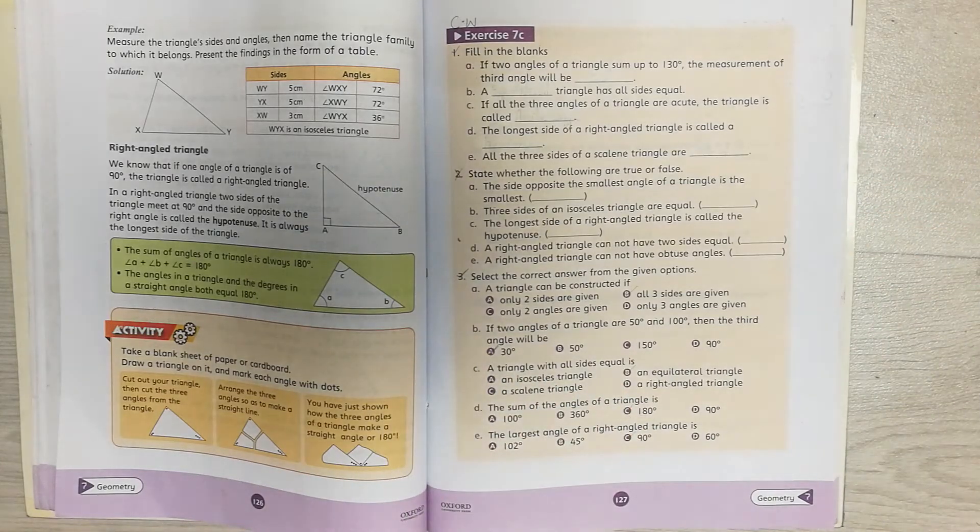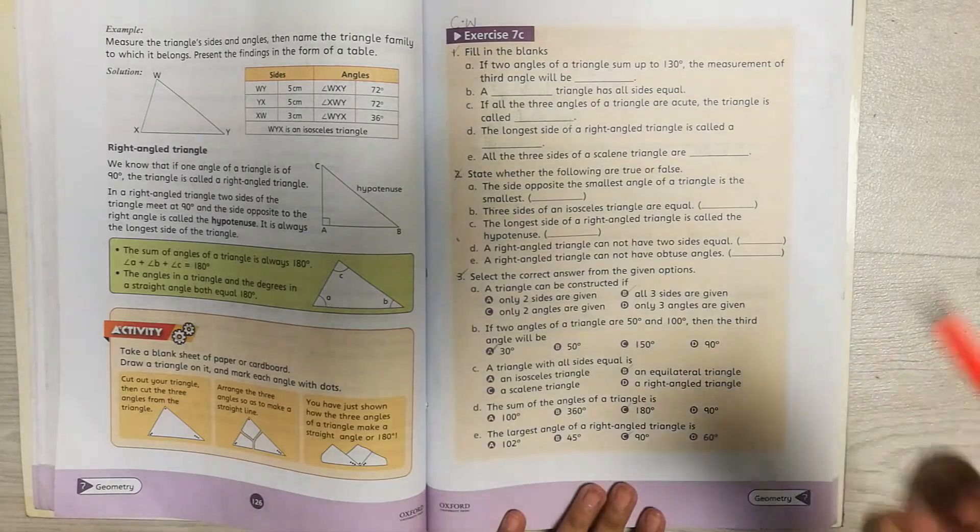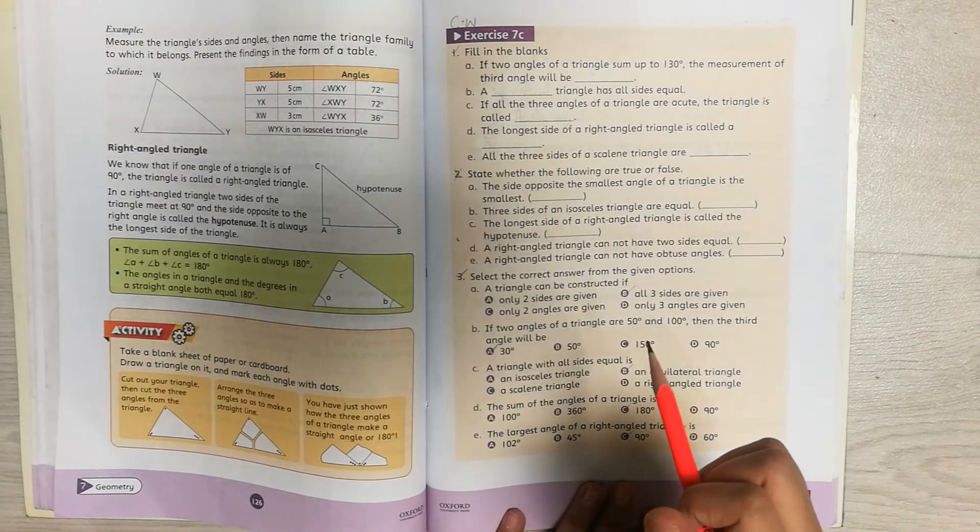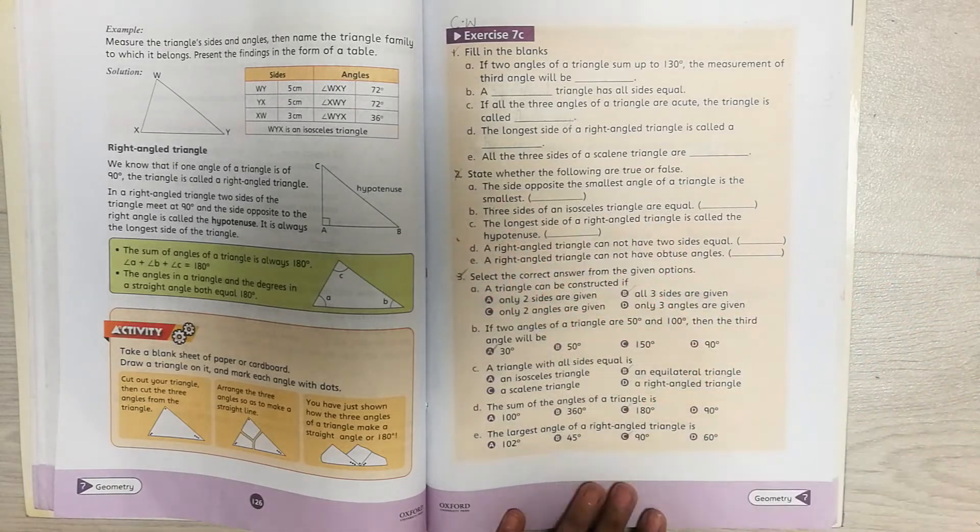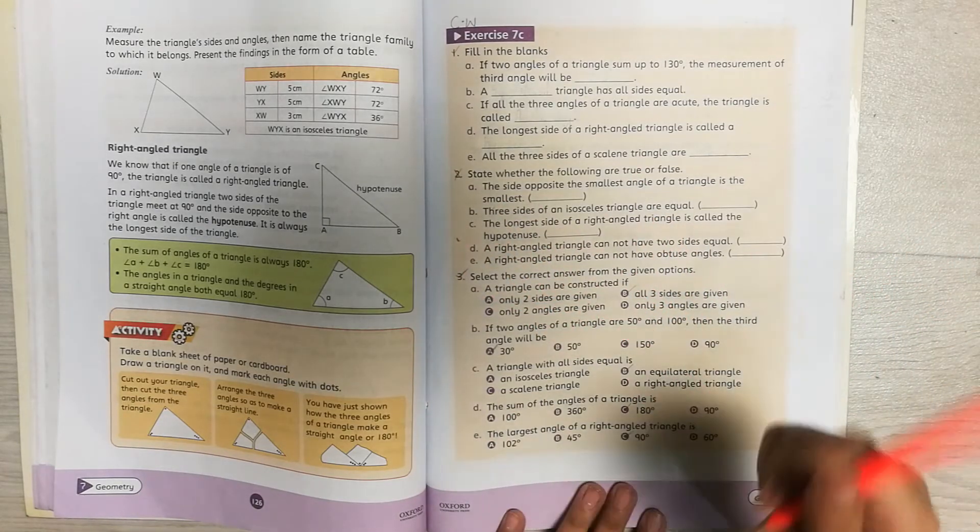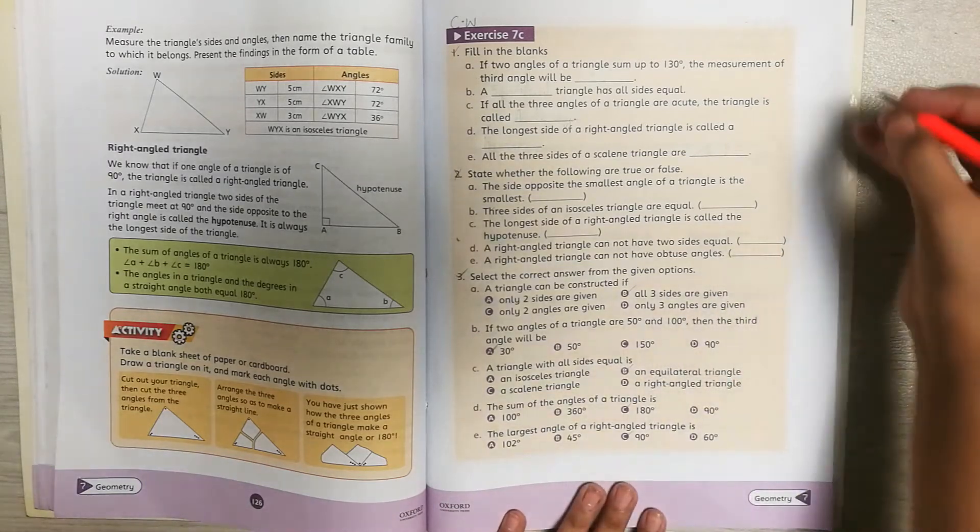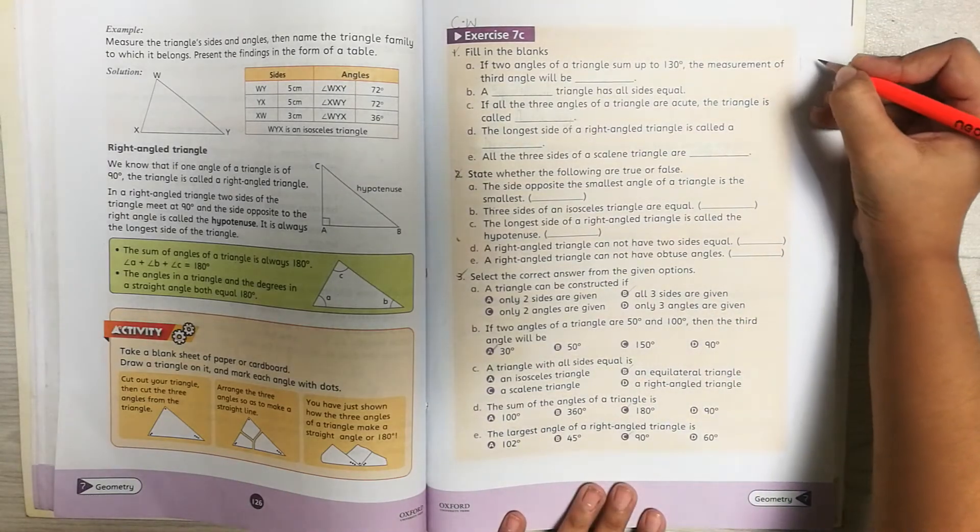As you know, all angles of a triangle add up to 180. So we are going to subtract 130 from 180. Let me show you how. First you write 180.